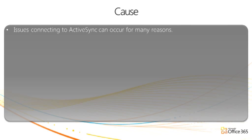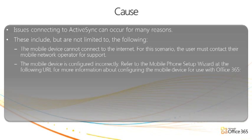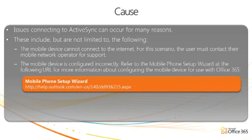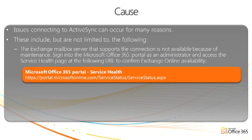Issues connecting to ActiveSync can occur for many reasons. These include but are not limited to the following: the mobile device cannot connect to the Internet — for this scenario, the user must contact their mobile network operator for support. The mobile device is configured incorrectly — refer to the mobile phone setup wizard for more information. The Exchange mailbox server may not be available due to maintenance — sign into the Office 365 portal as an administrator and access the Service Health page to confirm Exchange Online availability.